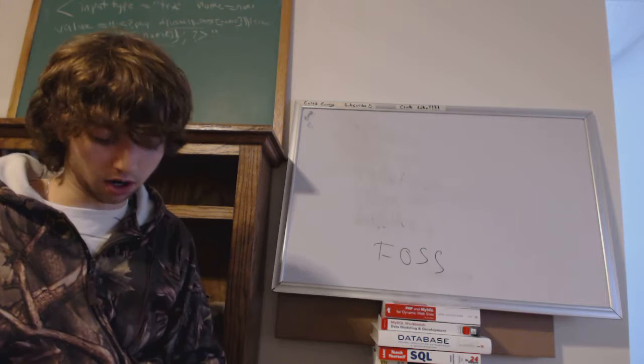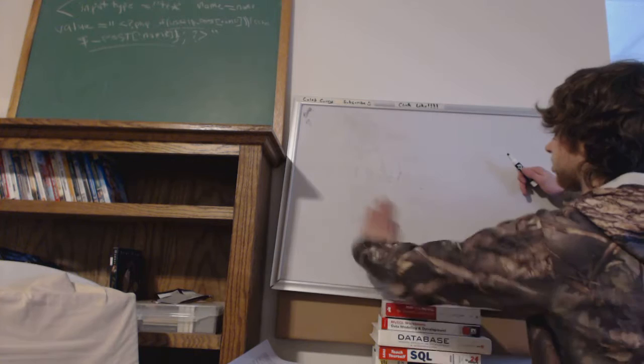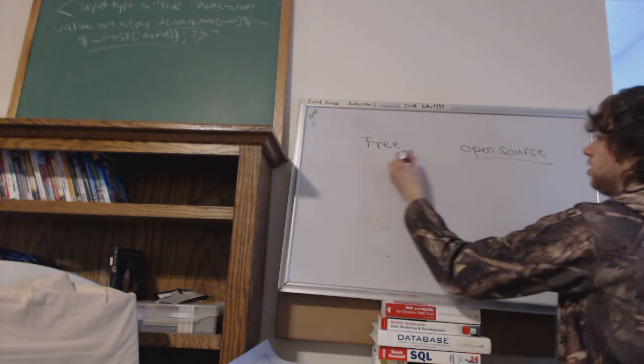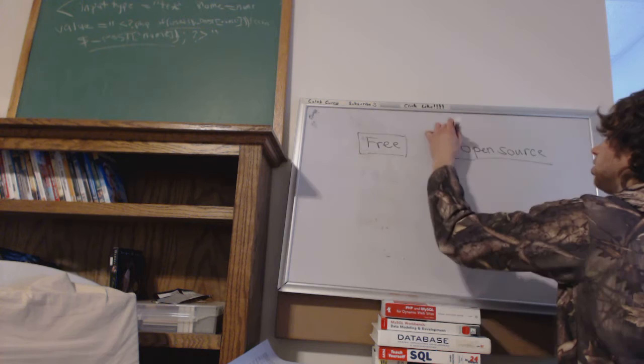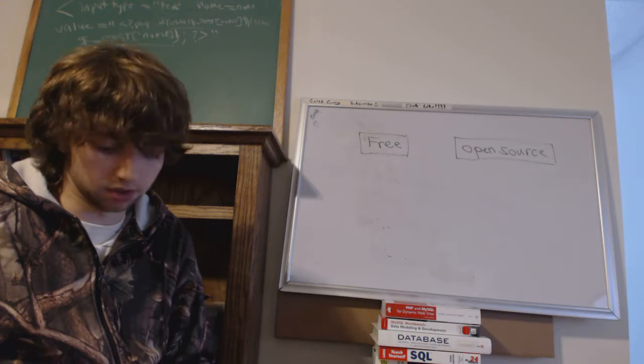There are two different distinctions we need to focus on: free and open source. These are, in fact, two different things. Software can be open source and it can be free as in speech, but they're not always the same thing. The rest of this video will be talking about the difference between these two types of software.